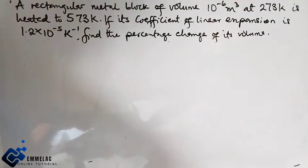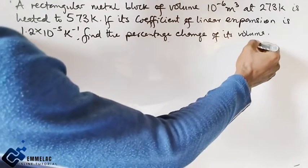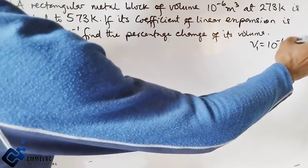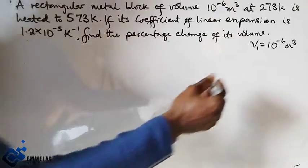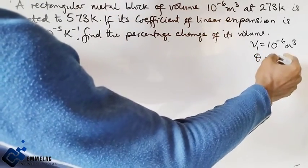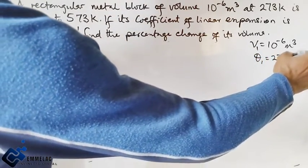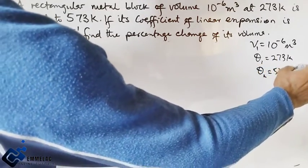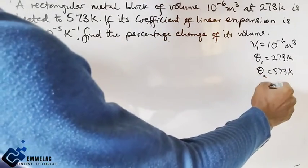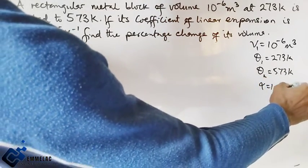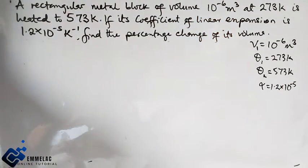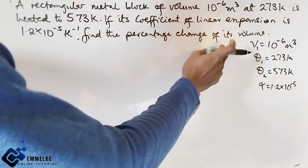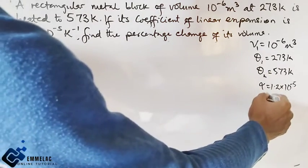To begin with, let us write out the parameters. We are given that volume V = 10^-6 m³, initial temperature θ₁ = 273 Kelvin, final temperature θ₂ = 573 Kelvin, and the linear expansivity α = 1.2×10^-5 per Kelvin. We are told to find the percentage change of the volume, so we need to find the change first, ΔV, which we don't know.